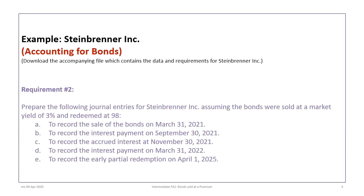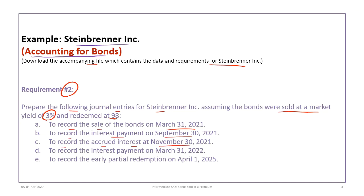This tutorial will continue with the Steinbrenner example. We're making a small revision to requirement 2 — we'll still prepare the journal entries for Steinbrenner, but this time we assume the bonds were sold when the market rate was three percent and the redemption is at 98 rather than 102. We'll cover the sale on March 31st, an interest payment on September 30th, accrued interest at the November year-end, another interest payment on March 31st 2022, and the early partial redemption on April 1st 2025.